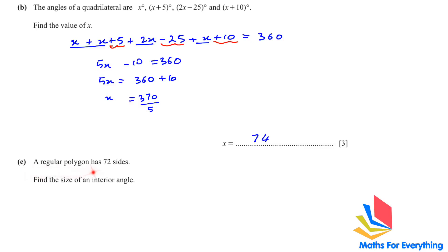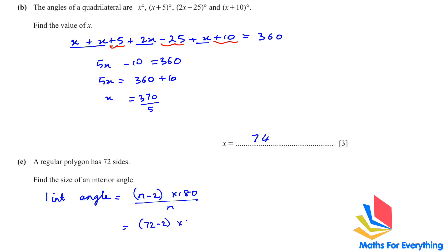Next: a regular polygon has 72 sides. Find the size of an interior angle. To find one interior angle we use the formula: (n minus 2) multiplied by 180, divided by n, where n is the number of sides. So (72 minus 2) multiplied by 180 divided by 72 gives 175 degrees. That is the size of an interior angle.